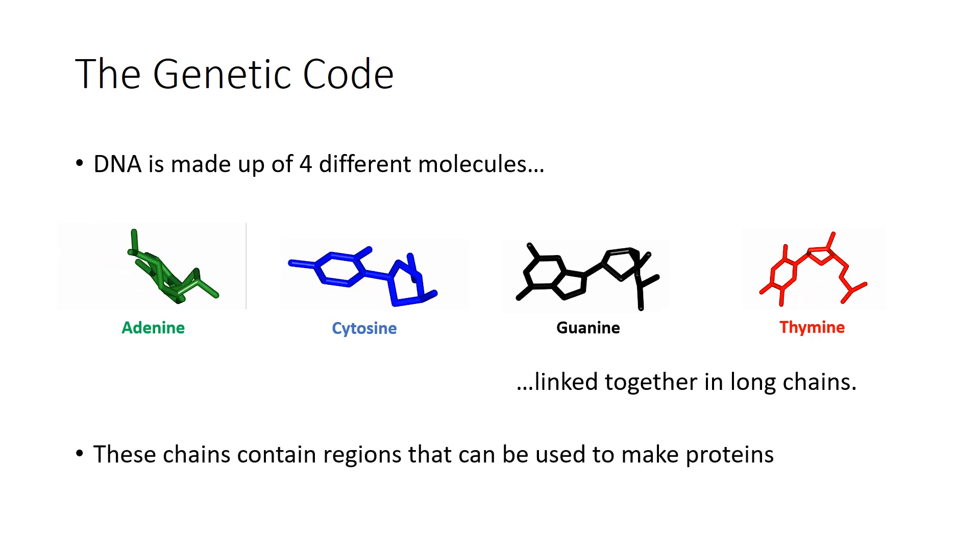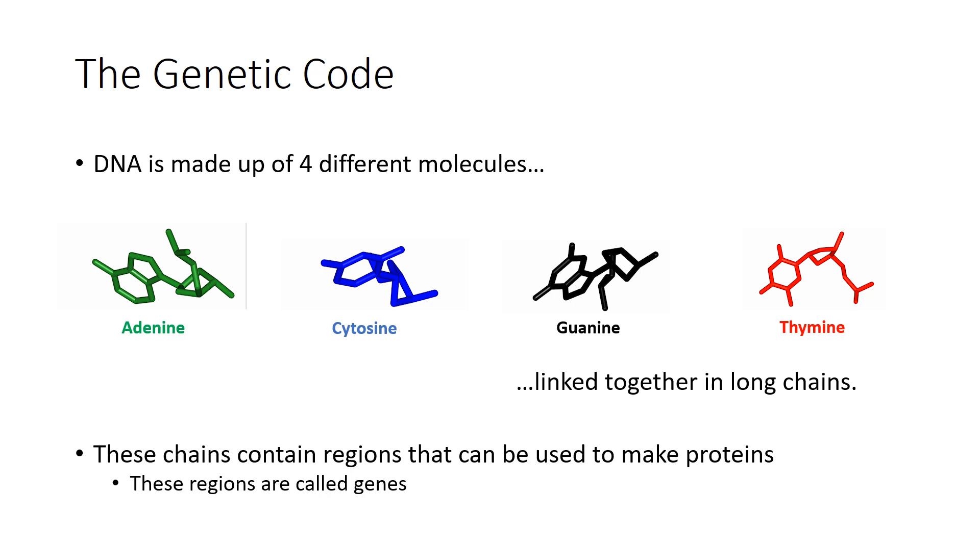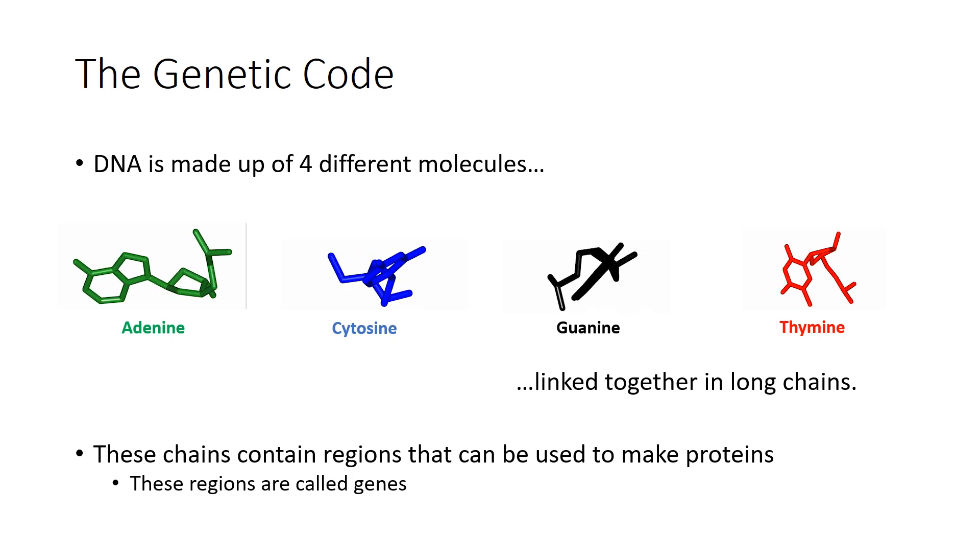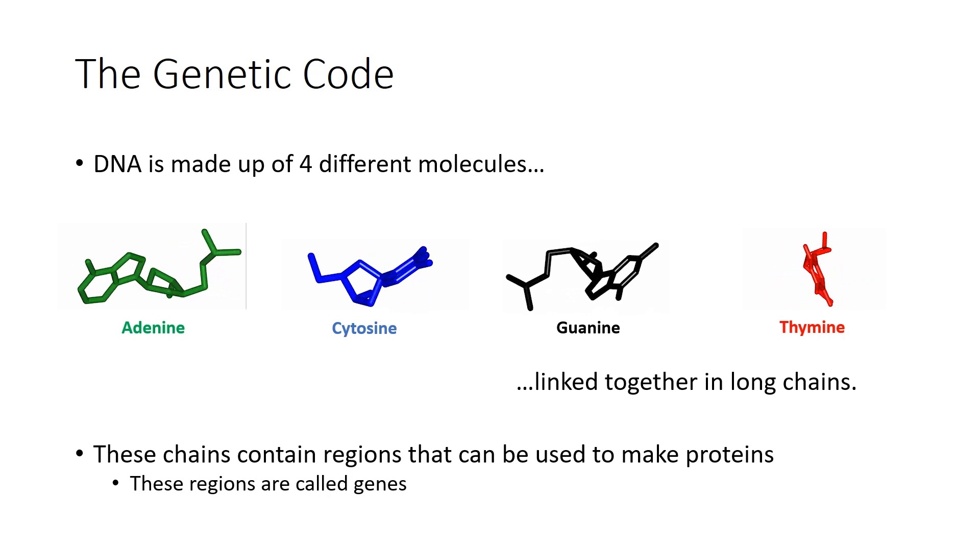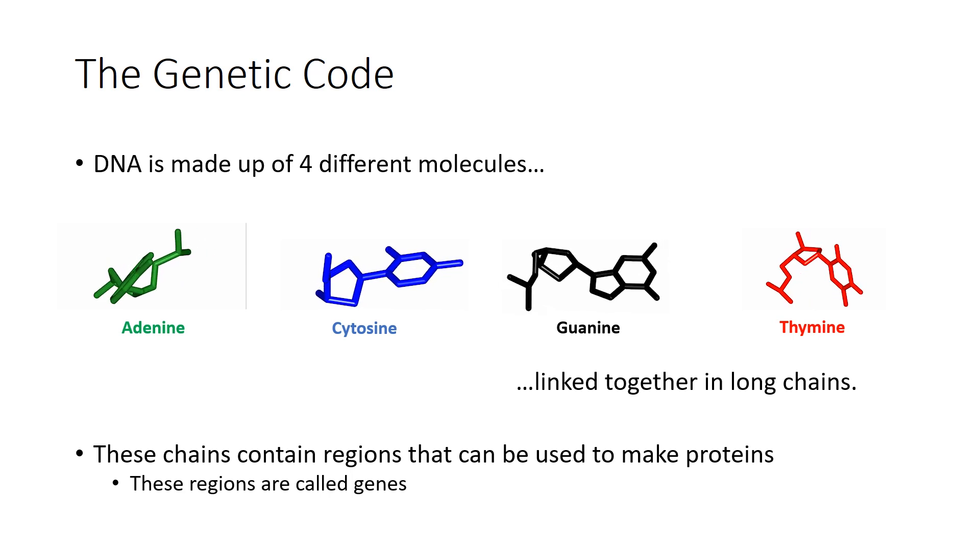Regions of DNA that produce proteins are called genes, and are subjected to the processes of transcription and translation in order to produce proteins. But how does the gene go from a sequence of nucleic acid molecules in a chain represented like this, to a protein made up of completely different amino acid molecules that ends up looking like this?